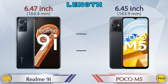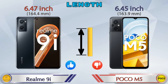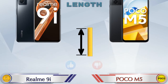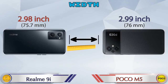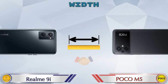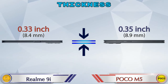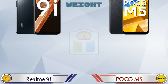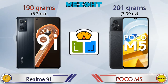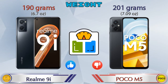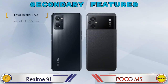Talking about the length of both phones: Realme 9i is 6.47 inches and Poco M5 is 6.45 inches, which is less than Realme 9i. Width: Realme 9i is 2.98 inches and Poco M5 is 2.99 inches, which are almost the same. Thickness: Realme 9i is 0.33 inches and Poco M5 is 0.35 inches, which is bigger than Realme 9i. Weight: Realme 9i is 190 grams and Poco M5 is 201 grams, which is heavier than Realme 9i.